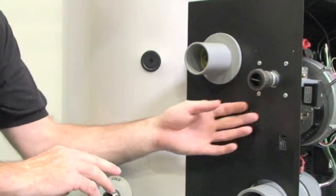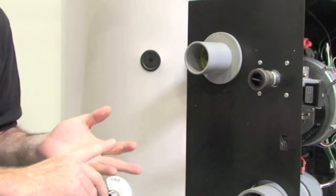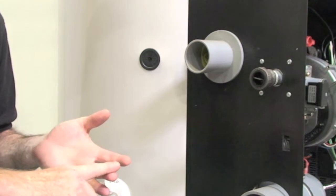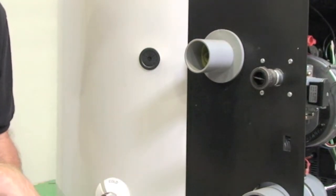So when we replace this we want to assure that our regulators are sized appropriately, our gas lines are sized appropriately and we have three and a half to 14 inches of water column available with no less than a half inch drop on ignition.